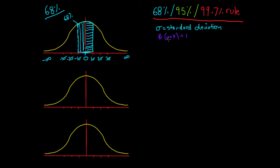We also have the property that the probability of x being any number equals 1. We can write 68% as a decimal: 68% divided by 100% equals 0.68. So 0.68 of the data is between negative one and positive one standard deviations. That's our 68% rule.